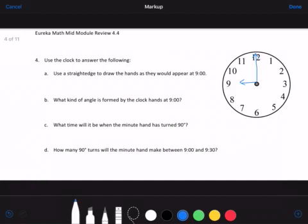What kind of angle is formed by the clock hands at 9 o'clock? That's where you can see that there is a 90-degree angle there, and when it forms a 90-degree angle, we call that a right angle.